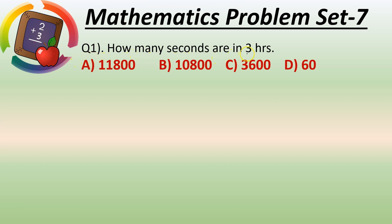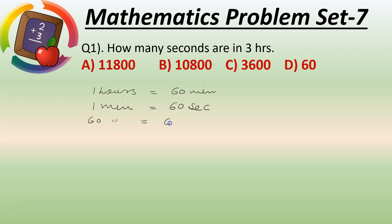How many seconds are in three hours? In one hour, how many minutes? One hour equals 60 minutes. And one minute equals how many seconds? Very good — 60 seconds. So one minute equals 60 seconds, and 60 minutes equals 60 into 60 seconds.